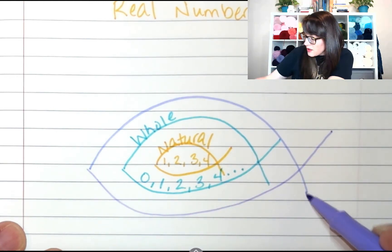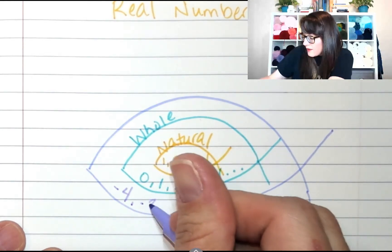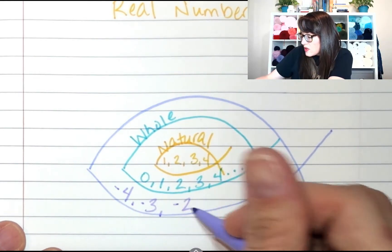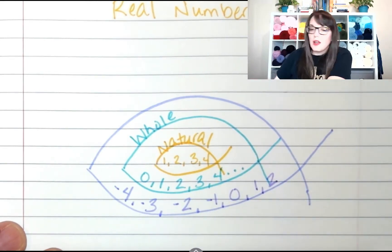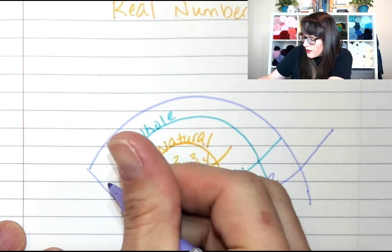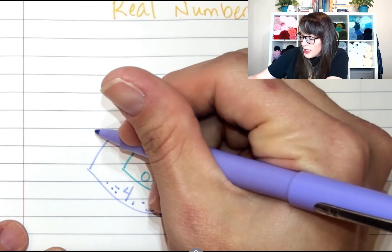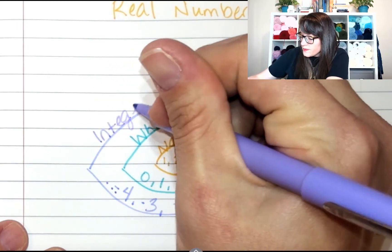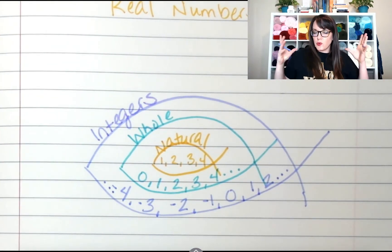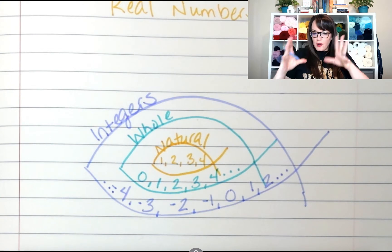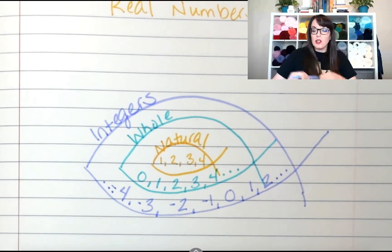These guys go: negative four, negative three, negative two, negative one, zero, one, two, and so on. This goes forever in both directions, and these are called integers. In sixth grade you covered integers — you dealt with whole numbers in negative form, added and subtracted, and put them on a number line.